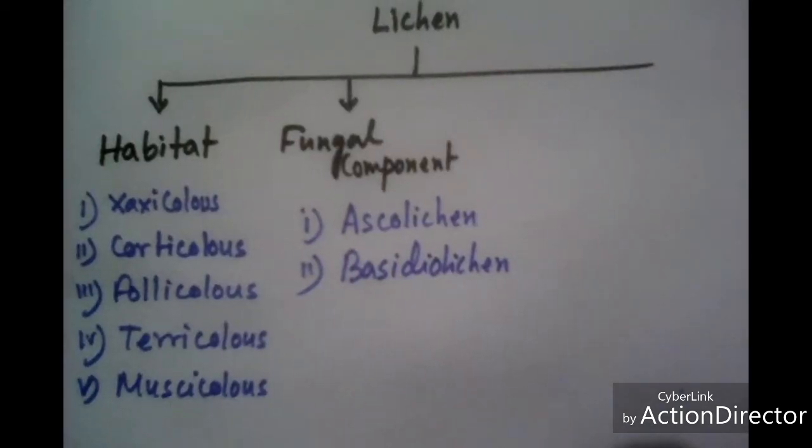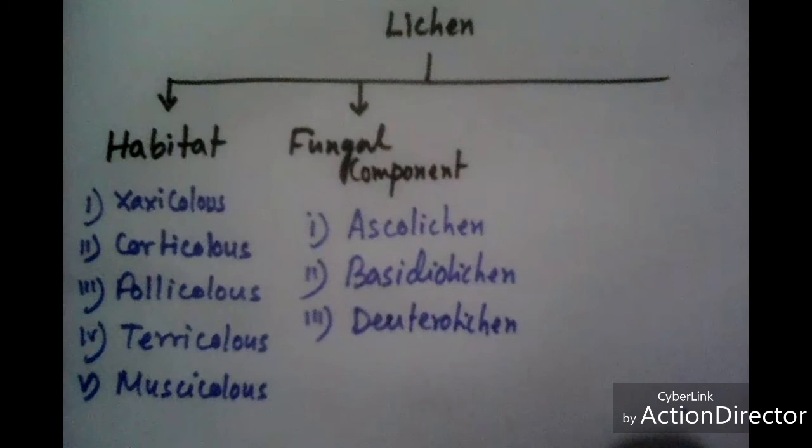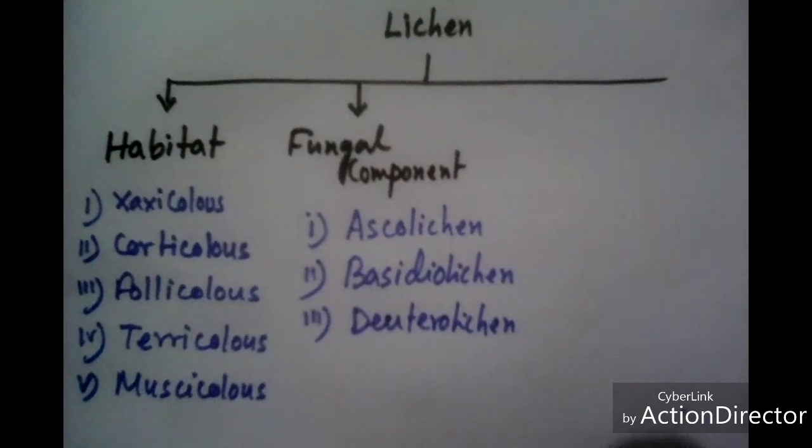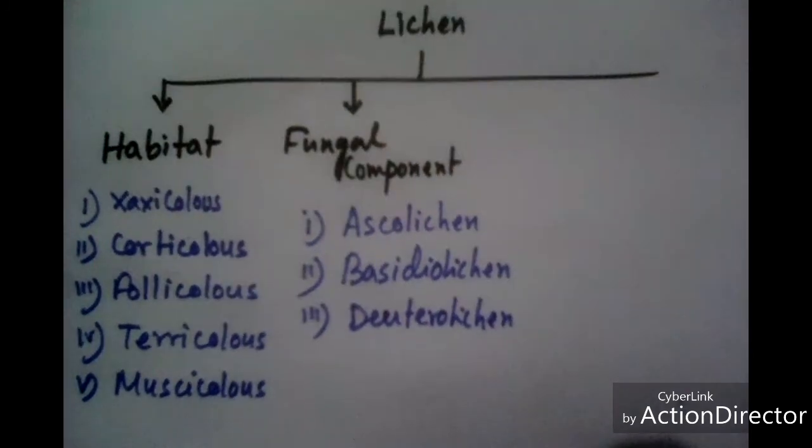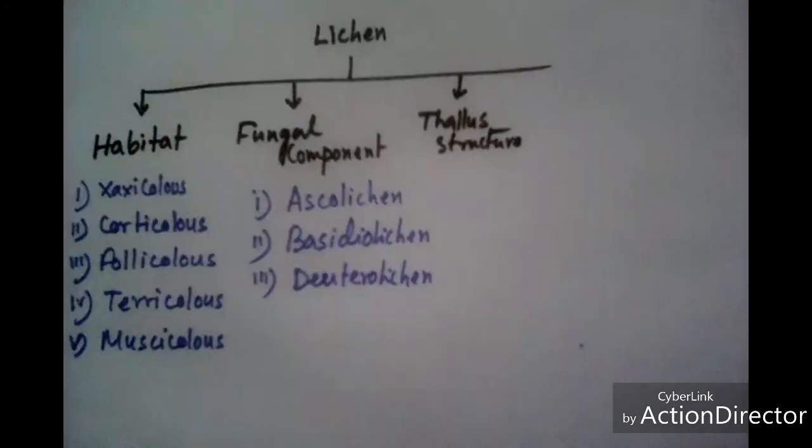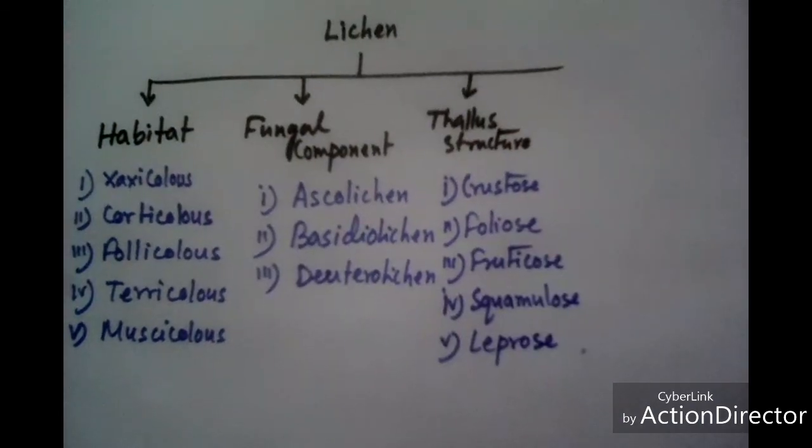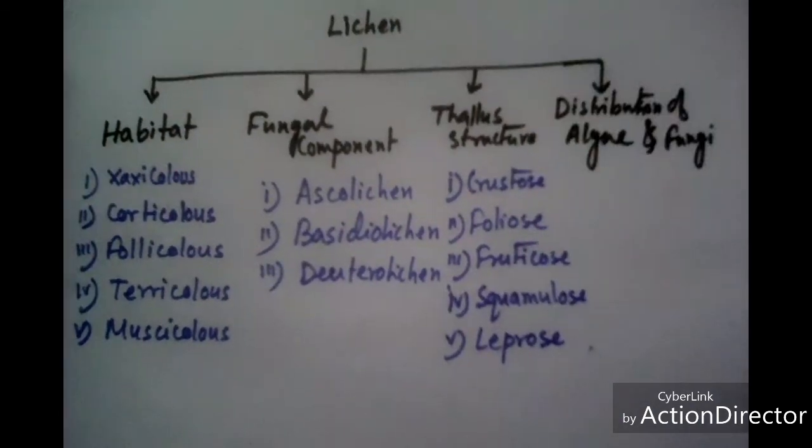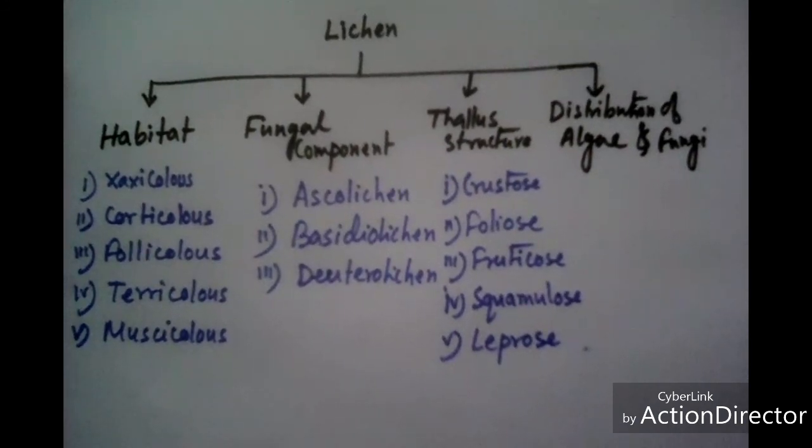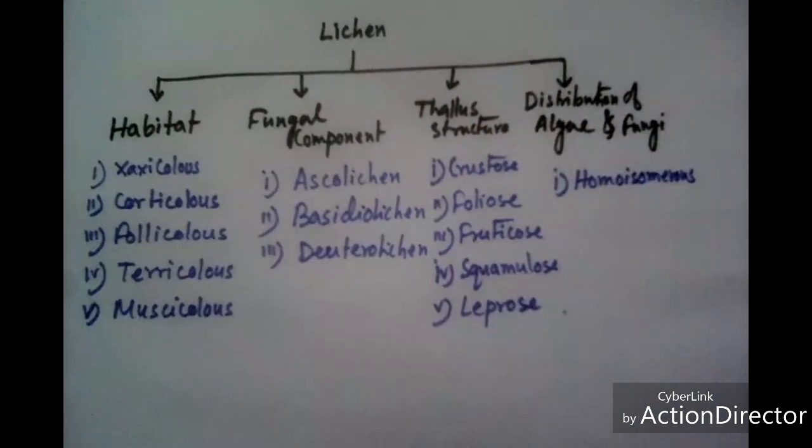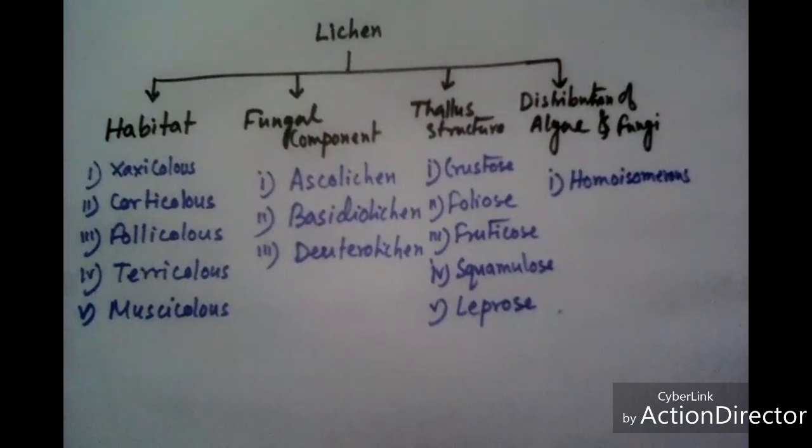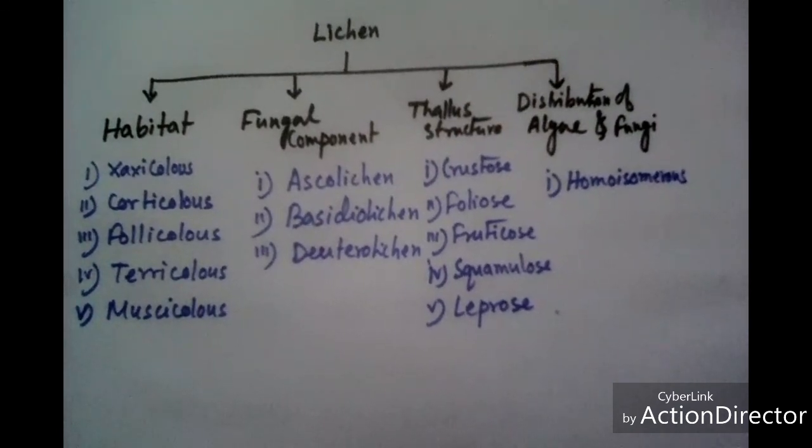On the basis of thallus structure: crustose lichen, foliose lichen, fruticose lichen, squamulose lichen, and leprose lichen. Based on distribution of algae and fungi component, we know lichen divides into two types: one is homoisomerous and another is heteroisomerous.